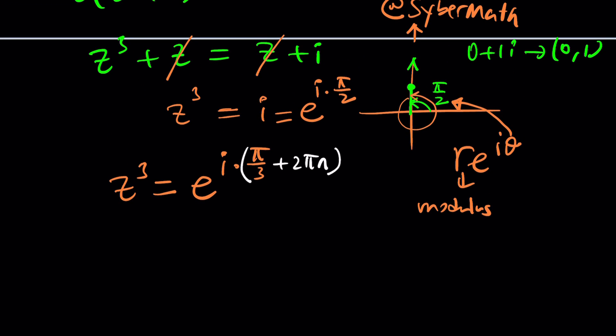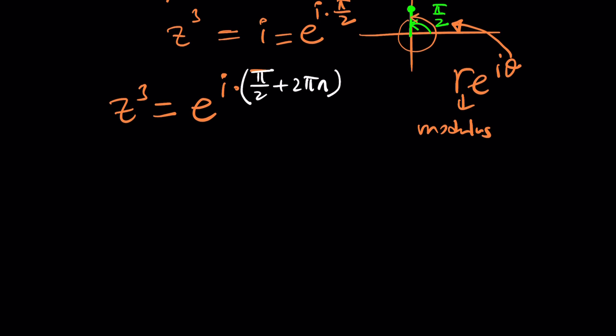The next thing would be dividing everything. By the way that should be pi over two not pi over three. And then the next thing we're gonna do is raise both sides to the power one third which is basically dividing everything by three. So z would be e to the power i times pi over six plus two pi n divided by three. There's a couple different ways to write it, you can also make a common denominator if you want and write it that way.